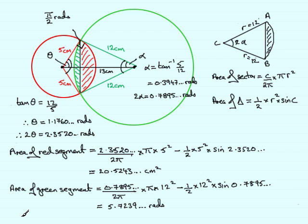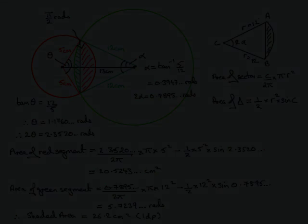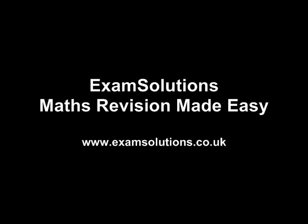So to get the final area, for the shaded area, what I've got to do is just simply add the two answers here together, and since they want the answer to one decimal place, what I get is 26.2 centimeter squares to one decimal place. Thank you.